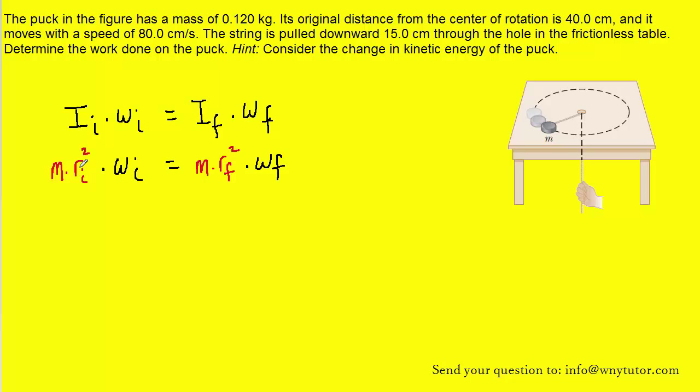So what we need to do is replace the I terms in this equation with mass times radius squared. Notice that we've included a subscript i to represent the initial radius of the puck's motion, and a subscript f to represent its final radius. Since mass appears on both sides of the equation, we can cancel it out.